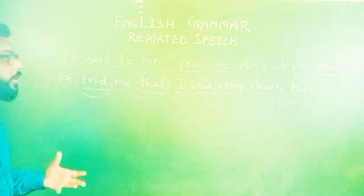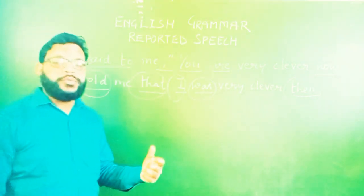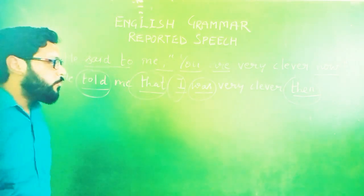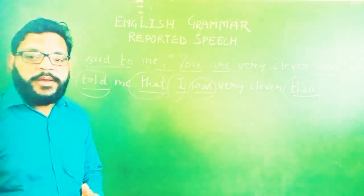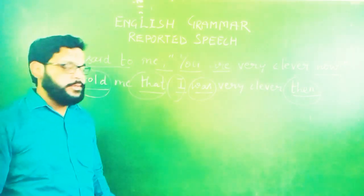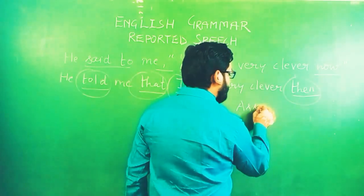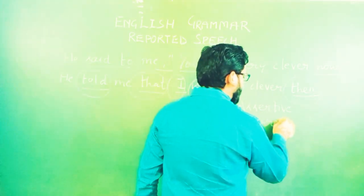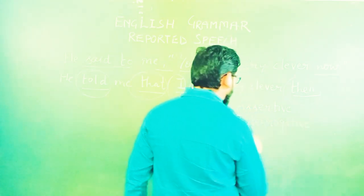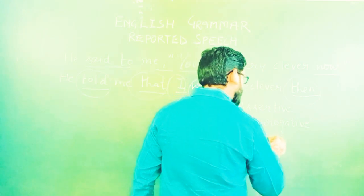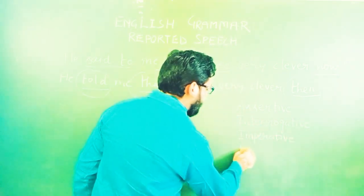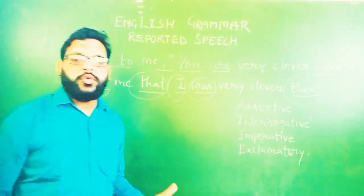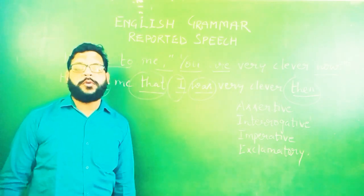If we go through the rules and want to go in depth, we will find that there are different types of sentences. Before understanding the topic, it is also necessary for all of us to know the sentence types. If we know what is an assertive sentence, what is an interrogative sentence, and what is an exclamatory sentence, converting direct and indirect speech will not create any problem for us.